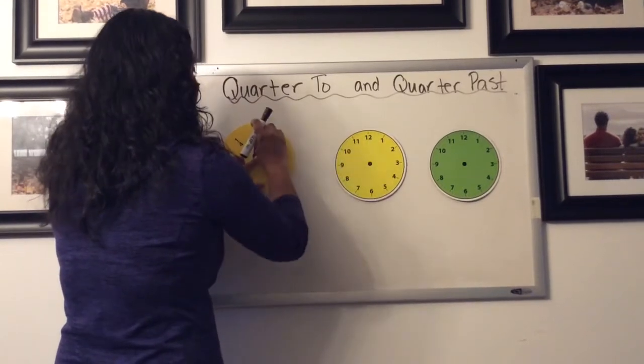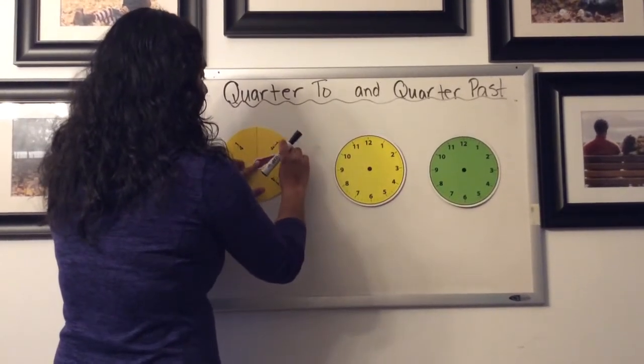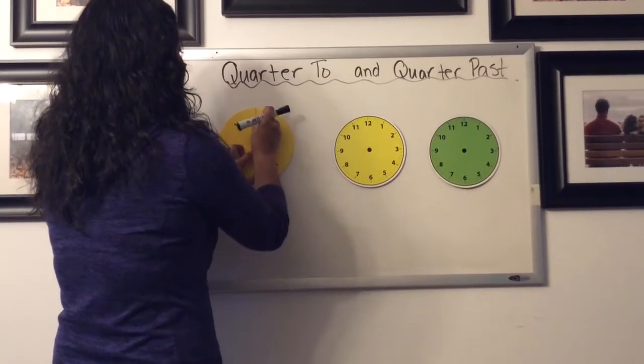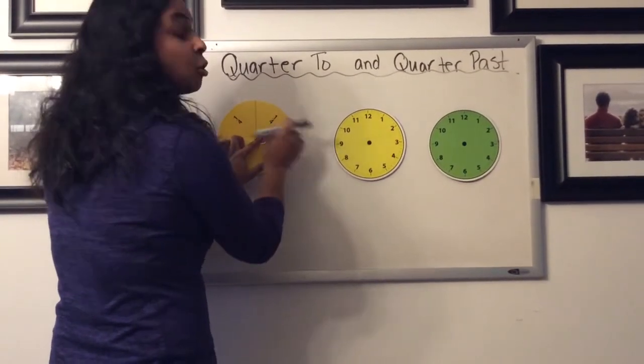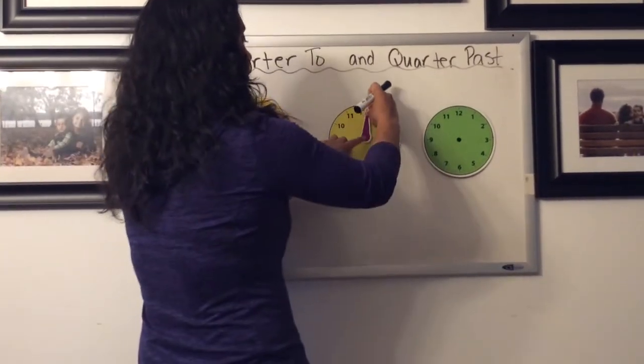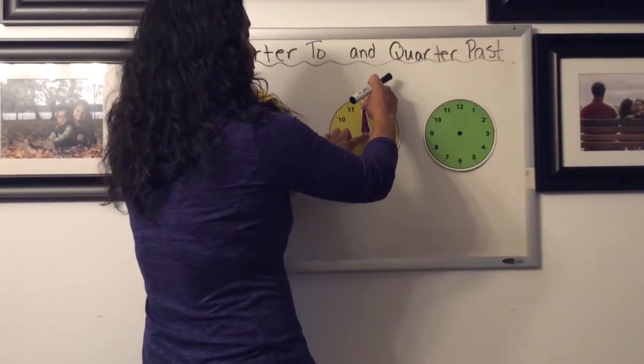This part here represents a quarter. So if it moves from here to here, we've gone a quarter of the way around the clock, or one fourth of the way. In other words, on a clock face, that would be from the 12 to the 3.